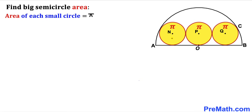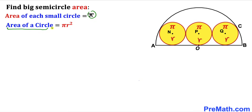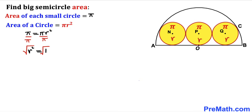Let me label the radius of these small circles as lowercase r. Since these circles are identical, each radius is r. Recalling the area of a circle formula: area = πr². Since the area is given as π, we get π = πr². Dividing both sides by π gives r² = 1, and taking the square root gives r = 1.